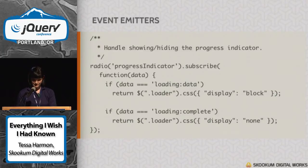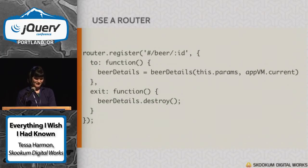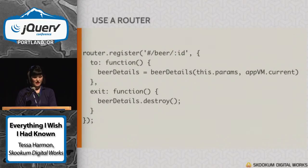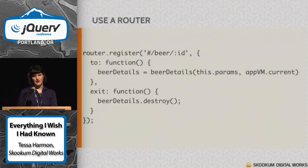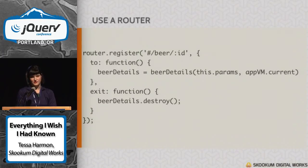Here's another example showing a router. You can see I have a parameter in here — the ID — so it takes the ID in and passes the parameters into my beer details constructor. That's basically how the route knows what to do on that URL. With PathJS there's an exit functionality, and I always have some sort of destroy that cleans up everything I've set up.